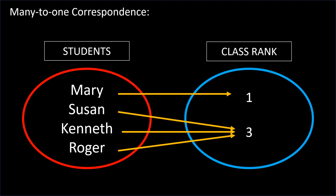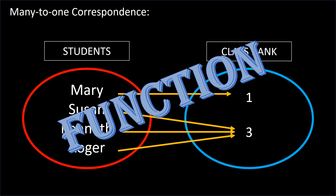Another is many-to-one correspondence: the relationship of students and their class rank. Mary is the top 1 of the class, while Susan, Kenneth, and Roger are all top 3 in the class. We can see that we have four independent x-values — Mary, Susan, Kenneth, and Roger — while we have two y-values: 1 and 3. This is also a function.